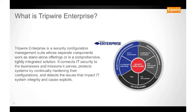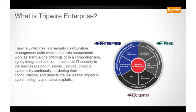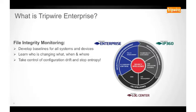Tripwire Enterprise is a security configuration management suite whose separate components work as standalone offerings or in a comprehensive, tightly integrated solution. It connects IT security to the businesses and missions it serves, protects systems by continually hardening their configurations, and detects the issues that impact IT system integrity and cause exploits. There are three main products of the Tripwire portfolio: Tripwire Enterprise for security configuration management, Tripwire IP360 for vulnerability management, and Tripwire Log Center for log intelligence. Tripwire Enterprise's File Integrity Manager module detects the anomalies, unexpected changes, and deviations that indicate exploit attempts or threats across the industry's broadest range of platforms, applications, and devices.